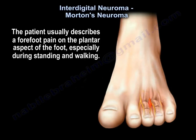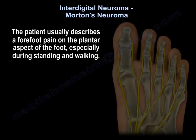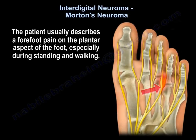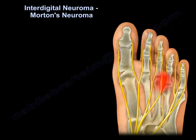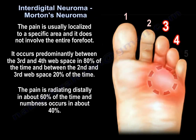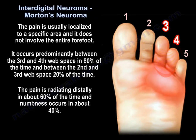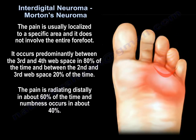The patient usually describes forefoot pain on the plantar aspect of the foot, especially during standing and walking. This is usually associated with radiation of tingling and burning into the affected toes. The pain is localized to a specific area and does not involve the entire forefoot. It occurs predominantly between the 3rd and 4th web space in 80% of cases and between the 2nd and 3rd web space 20% of the time. Pain radiates distally about 60% of the time and numbness occurs in about 40%.